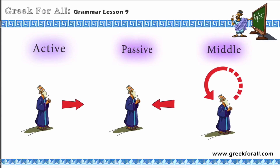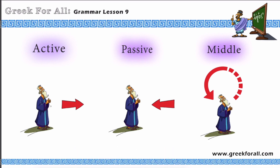What is the middle passive voice? Here we have a screenshot from my video course — the link will be in the description box below. The voice shows the direction of the verb's action. The active voice shows that the subject produces the action, so the action of the verb goes away from the subject to the direct object. The passive voice shows that the subject receives the action of the verb — it's on the receiving end.